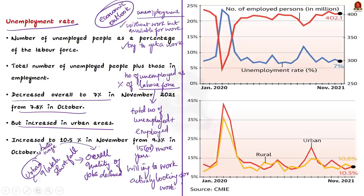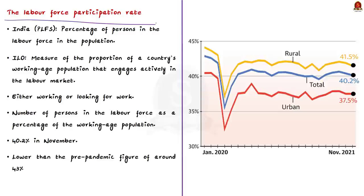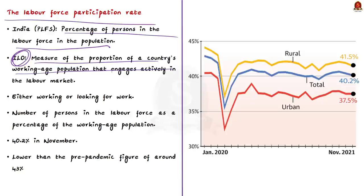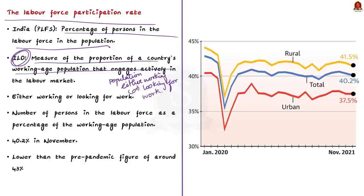The labor force participation rate (LFPR) is the number of persons in the labor force as a percentage of the working age population. According to ILO, the working age population includes those either working or looking for work. India's LFPR was 40.2% in November 2021 and 40.4% in October 2021 — notably lower than the pre-pandemic figure of around 43%.